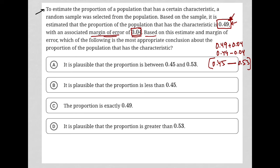Choice A says it is plausible that the proportion is between 0.45 and 0.53. That is a perfect answer. Choice A must be correct.